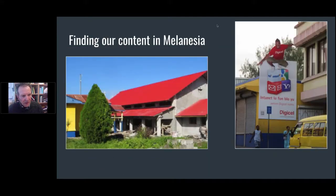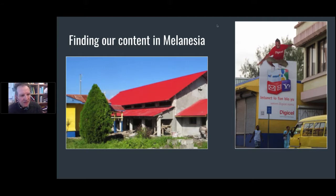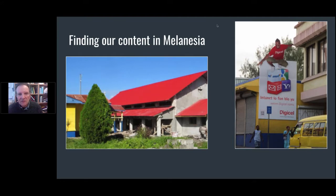Ultimately we want to get this material out to the Pacific, and what's amazing is that now most people in the Pacific have mobile phones and are accessing the internet. On the right you can see a poster for internet on your phone in Port Vila in Vanuatu, and on the left there's a church with a mobile phone tower above it — that's now how people are accessing this kind of information. We want to make our material findable for people in these remote locations, even in the highlands of Papua New Guinea or the most remote parts of the Pacific.